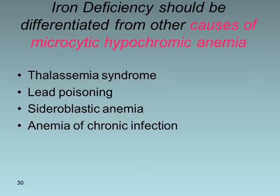Iron deficiency anemia should be differentiated from other causes of microcytic hypochromic anemia: thalassemia syndromes, lead poisoning, sideroblastic anemia, and anemia of chronic infection.